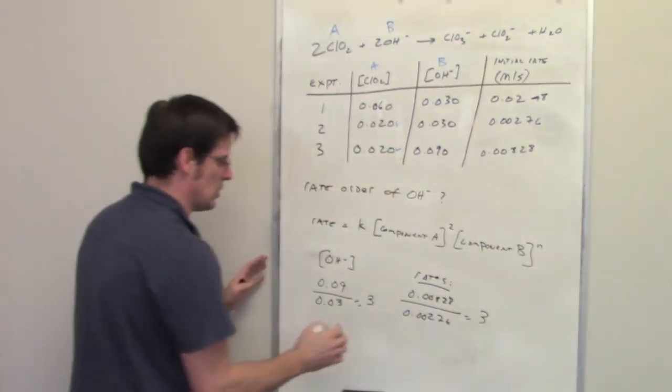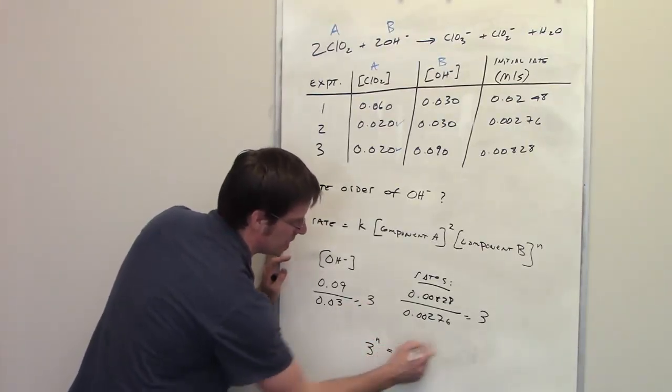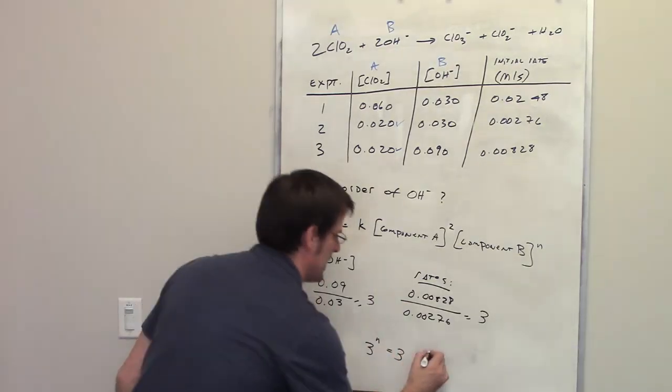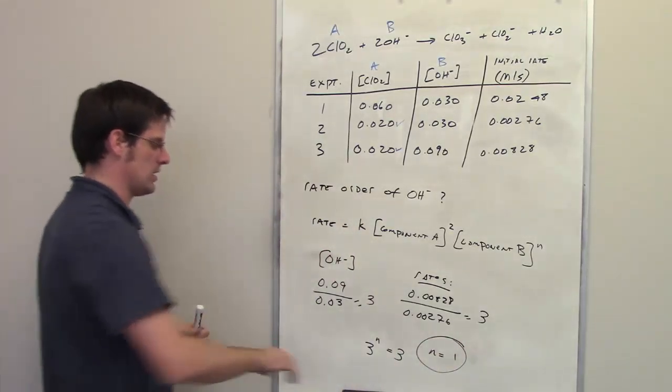Now all I do, I've got these two numbers, is I take 3, this number, raised to the N equals this number, 3. Solve for N. What does N turn out to be? N, in this case, equals 1. That is the reaction order with respect to hydroxide.